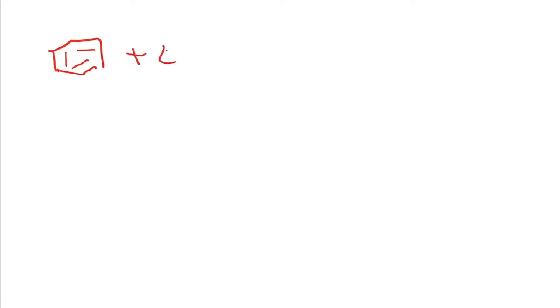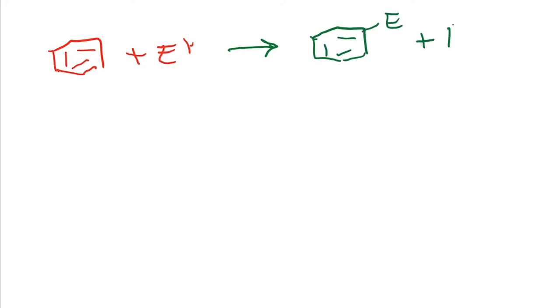Alright, so now let us get back to electrophilic aromatic substitution with other electrophiles. So far we have been looking at, for example, bromination. The basic reaction, just to recall, is basically the reaction of an electrophile with benzene to give you the electrophilic aromatic substituted product.